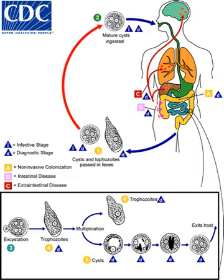E. histolytica cysts are usually resistant to chlorination, therefore sedimentation and filtration of water supplies are necessary to reduce the incidence of infection. E. histolytica cysts may be recovered from contaminated food by methods similar to those used for recovering Giardia lamblia cysts from feces. Filtration is probably the most practical method for recovery from drinking water and liquid foods. E. histolytica cysts must be distinguished from cysts of other parasitic protozoa and from cysts of free-living protozoa. Recovery procedures are not very accurate; cysts are easily lost or damaged beyond recognition, which leads to many falsely negative results in recovery tests.